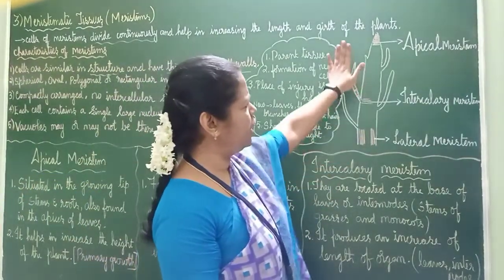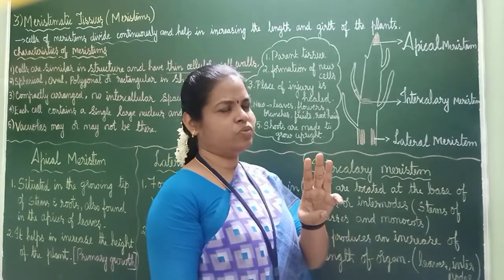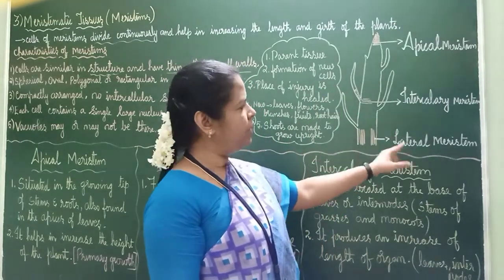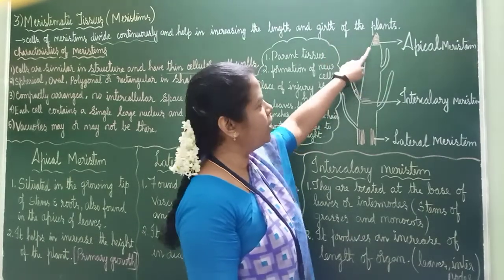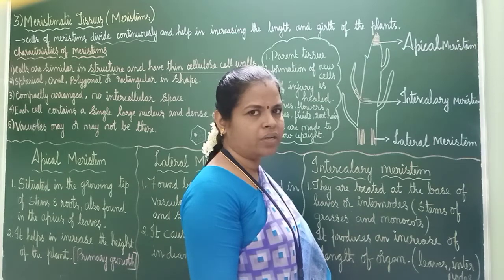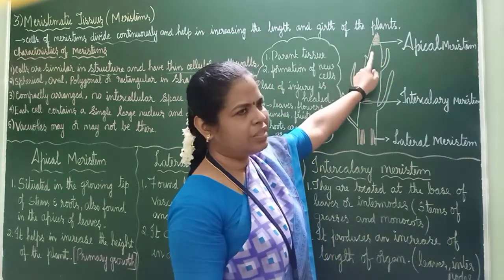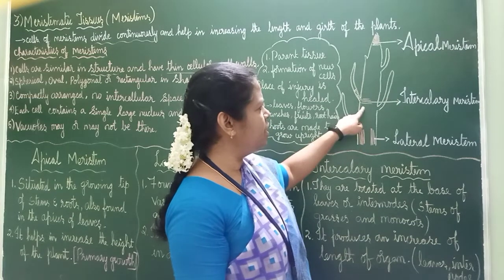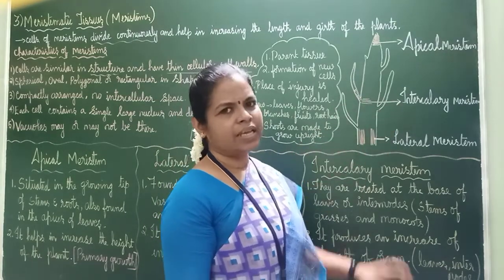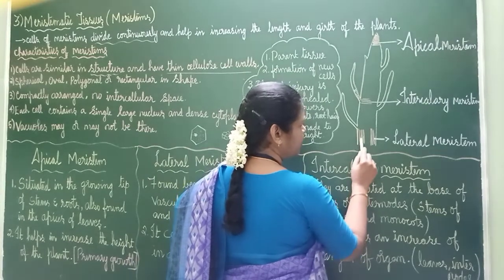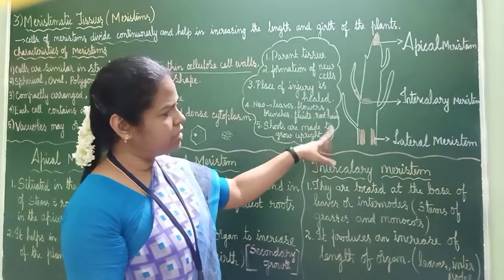Looking at this diagram, I have drawn a plant and located the meristems. We have studied three types of meristems: apical meristem, intercalary meristem, and lateral meristem. The name apical meristem tells us it is at the apical tip — at the tip of the stem or root, shown here in brown color. Intercalary meristem is located at the base of a branch or leaf. Lateral meristem is seen in another portion of the stem.